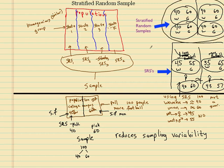We're going to be doing a lot of examples with stratified random sample. It's very important — age could be a strata, race in companies is definitely a big one, how much money you make — all these different categories could be used as strata. Thanks for watching, and have a nice day.